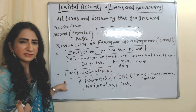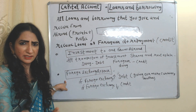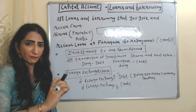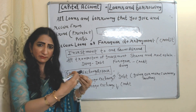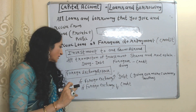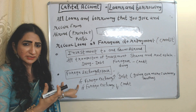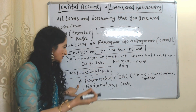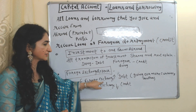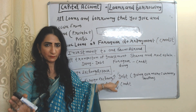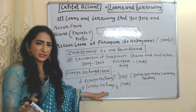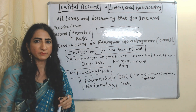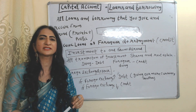Foreign exchange reserves mainly include foreign currency. In order to receive foreign currency, we have to give our own currency. If foreign exchange reserves increase, more of our money is going to another country, so it will be debited in the Balance of Payment account. If foreign exchange reserves fall, it will be credited.